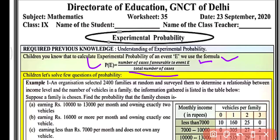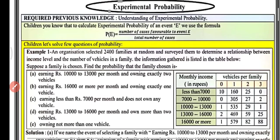Example number one: an organization selected 2400 families at random and surveyed them to determine a relationship between income level and the number of vehicles in a family. The information gathered is listed in the table below, as you can see on the screen. Suppose a family is chosen.